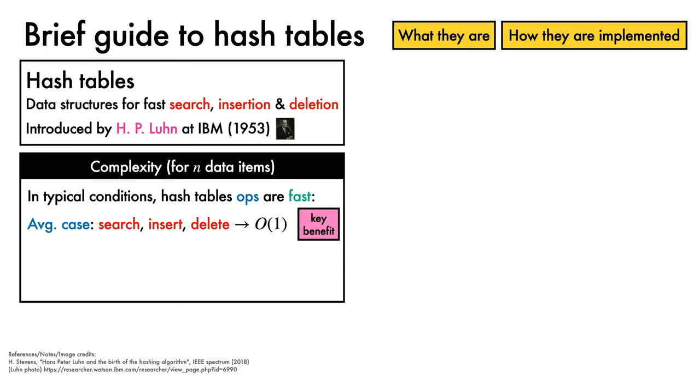A note of caution, though, is warranted. Their worst-case behavior can be very poor, with searching, insertion, and deletion exhibiting linear complexity in n. When considering storage rather than operations, the complexity of hash tables is linear in the number of stored items.